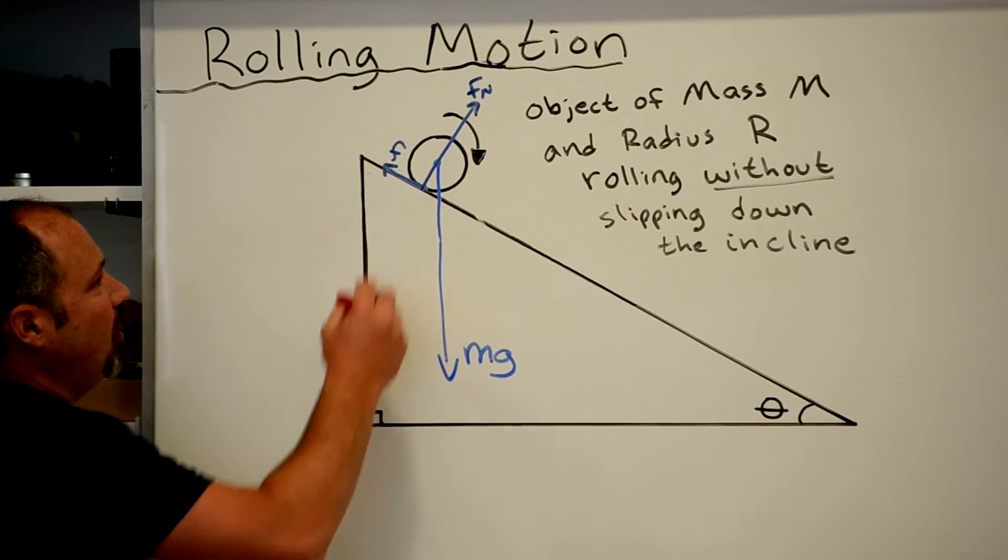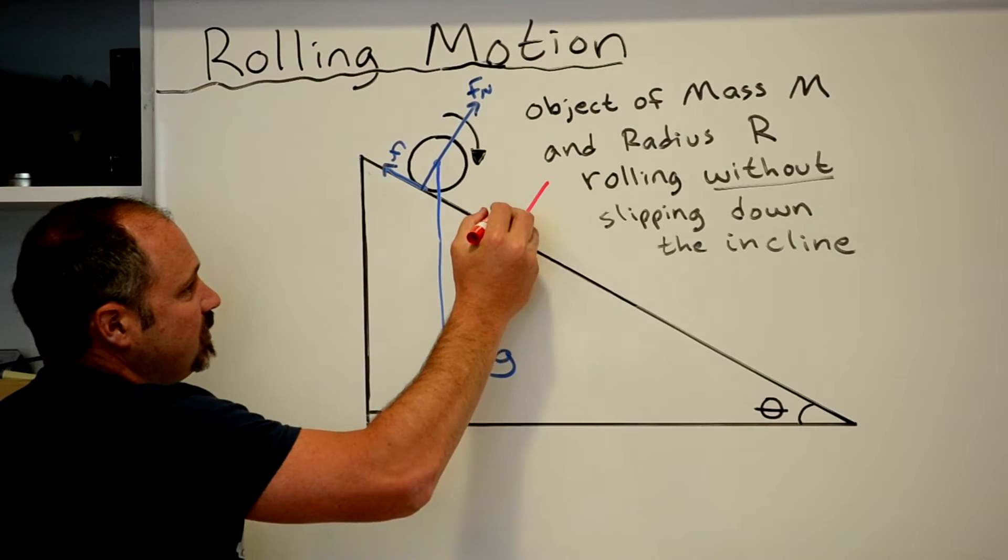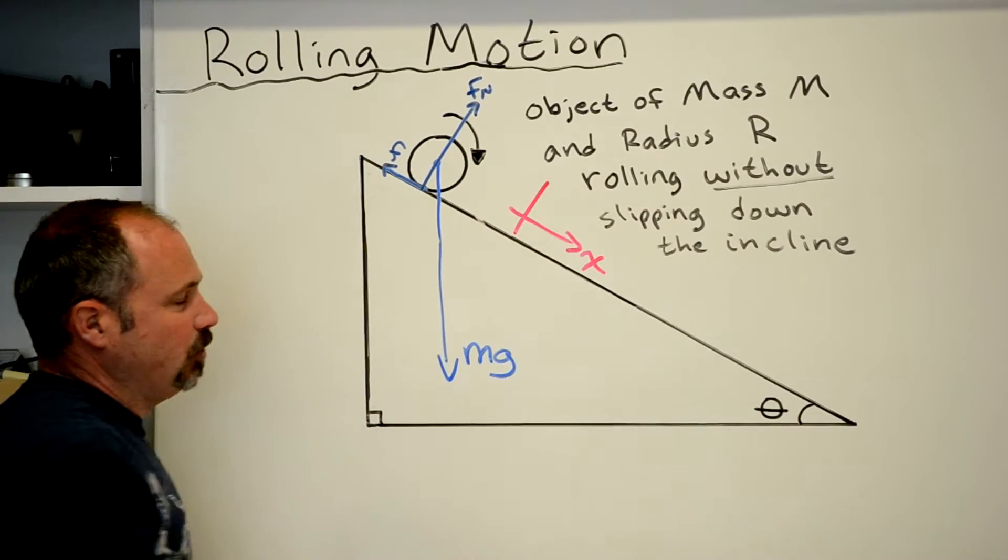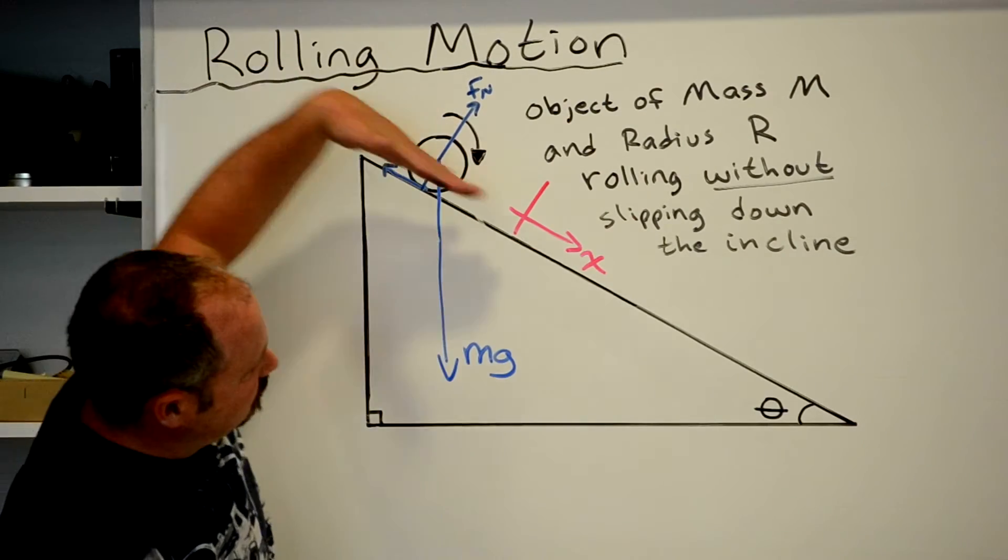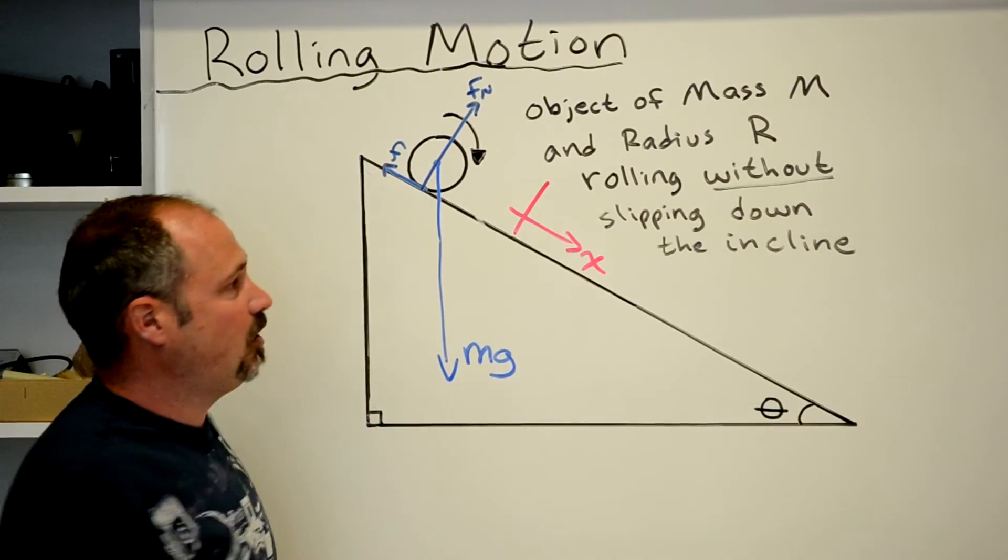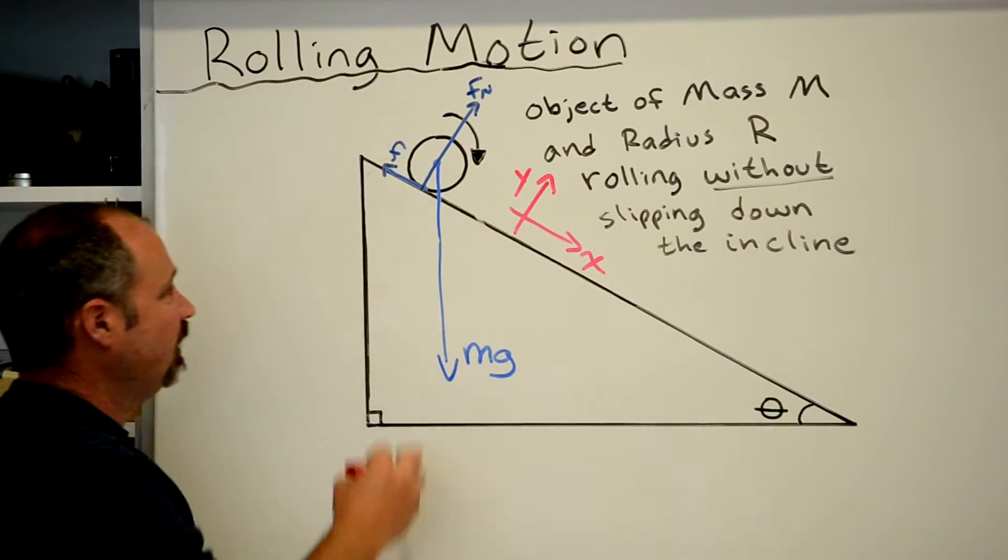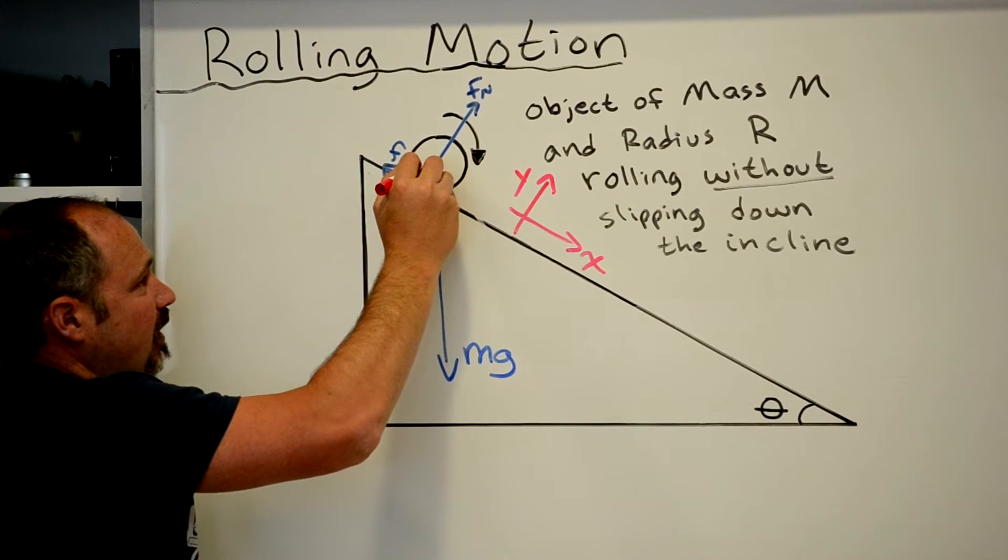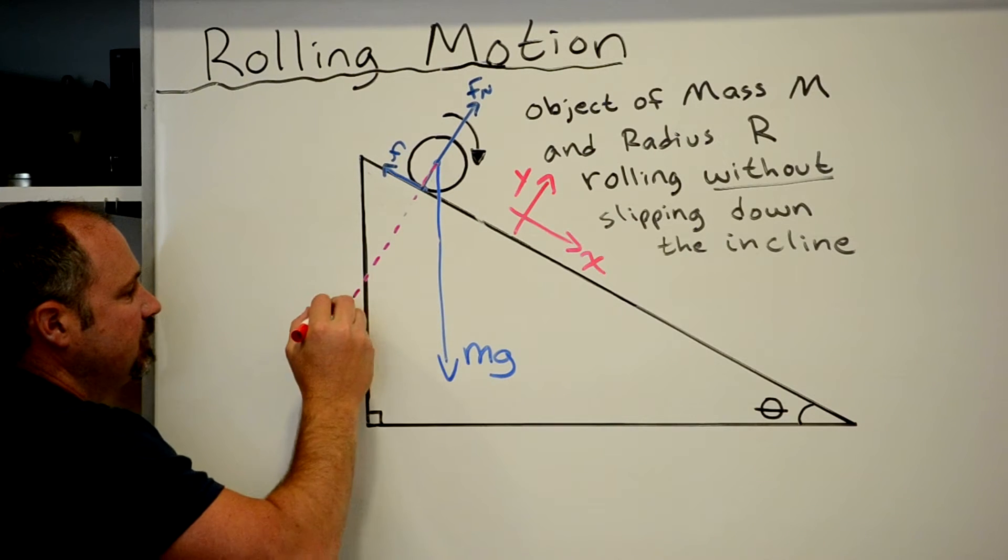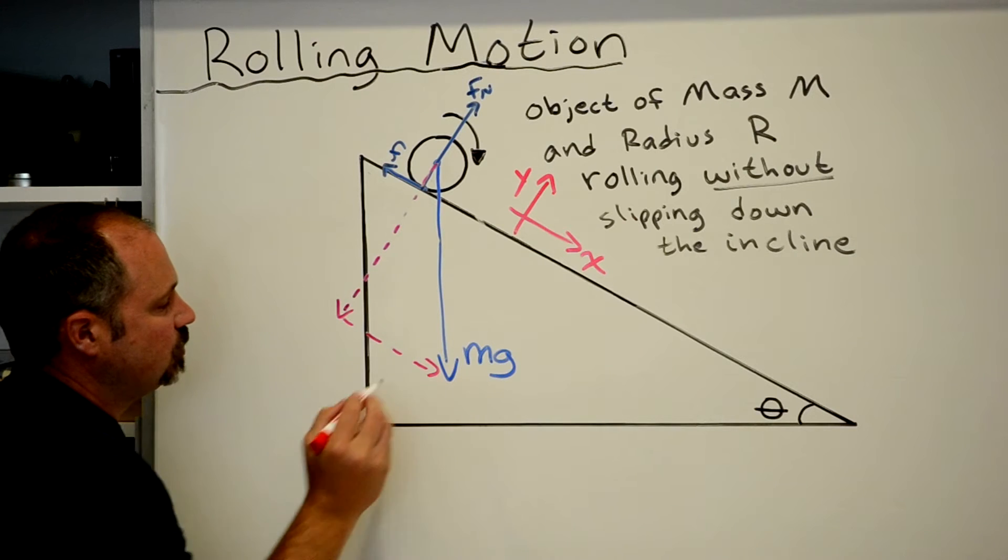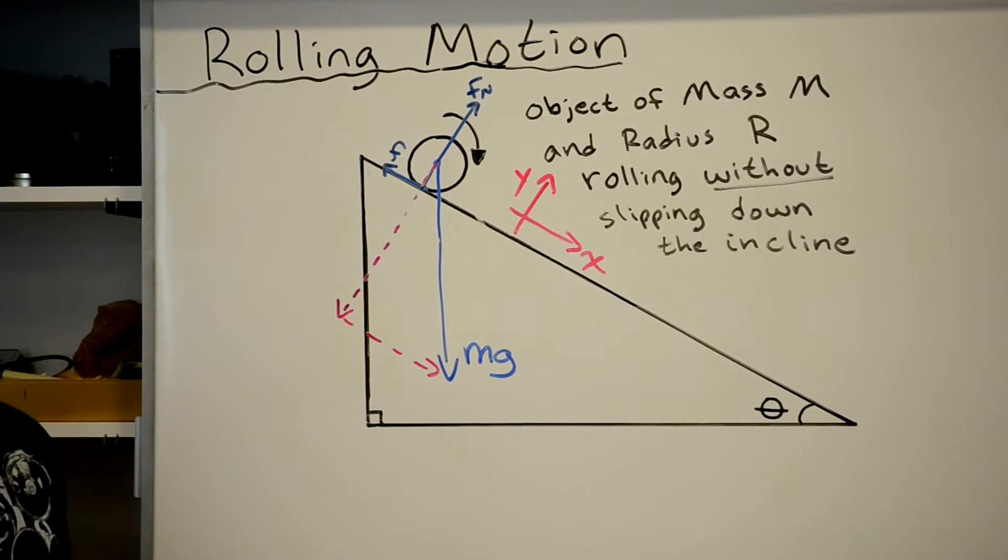And I will also choose a coordinate system. And I'm going to rotate it such that the x-axis points down the incline and the y-axis is perpendicular to the incline. The force of gravity, I'll then break into its components. There's two components. One in the x, one in the y.